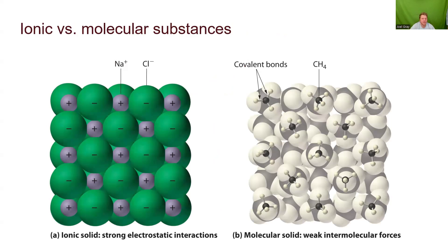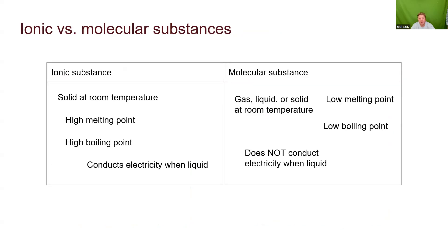Ionic and molecular substances differ significantly. Ionic substances are really strongly and tightly held together, whereas molecular substances like CH4 have a bunch of weak interactions holding the molecules together. Ionic substances and molecular substances have different physical properties. For example, an ionic substance is typically - and this is a great test question - going to be a solid at room temperature. Most of the time when you think about an ionic substance, you're thinking about it as a solid.